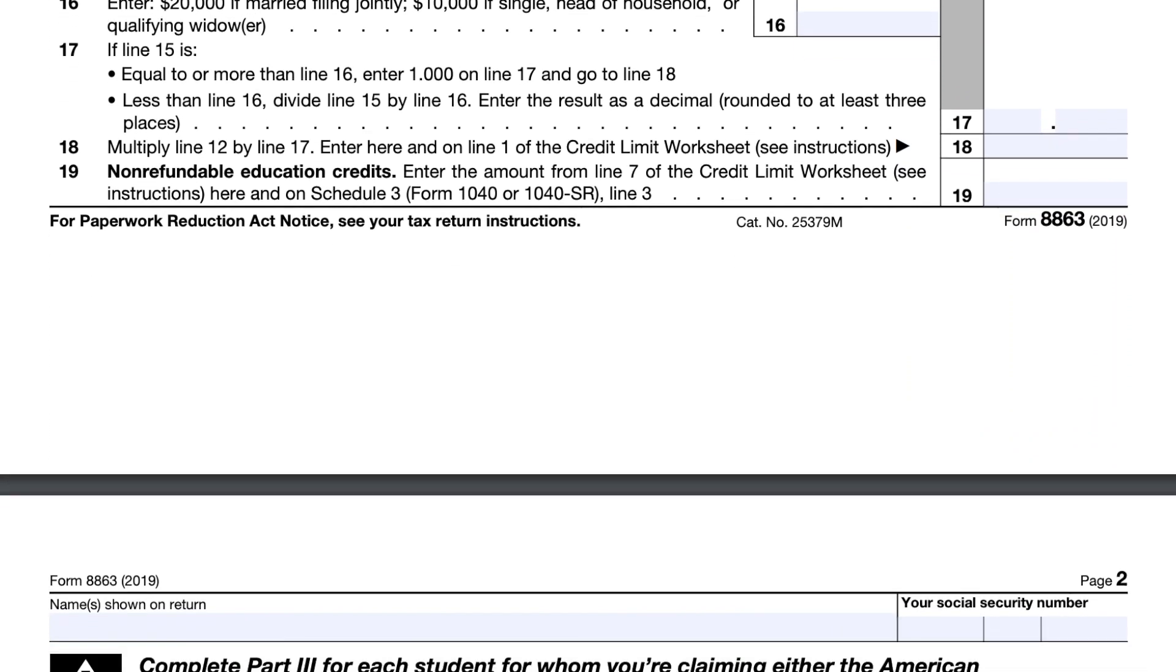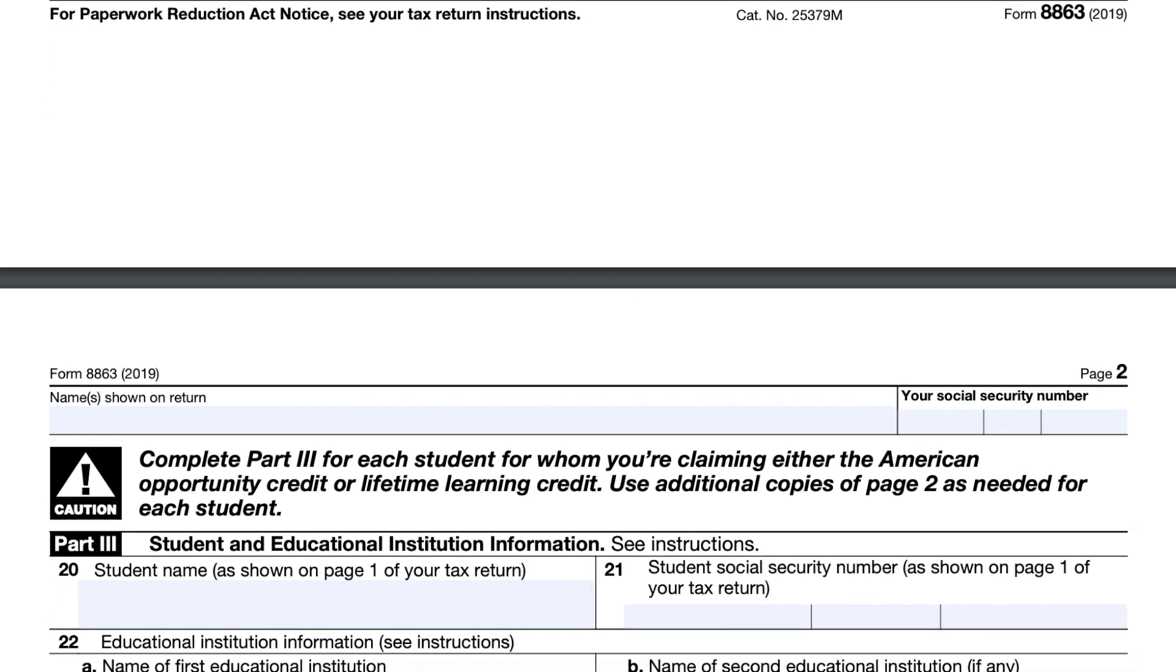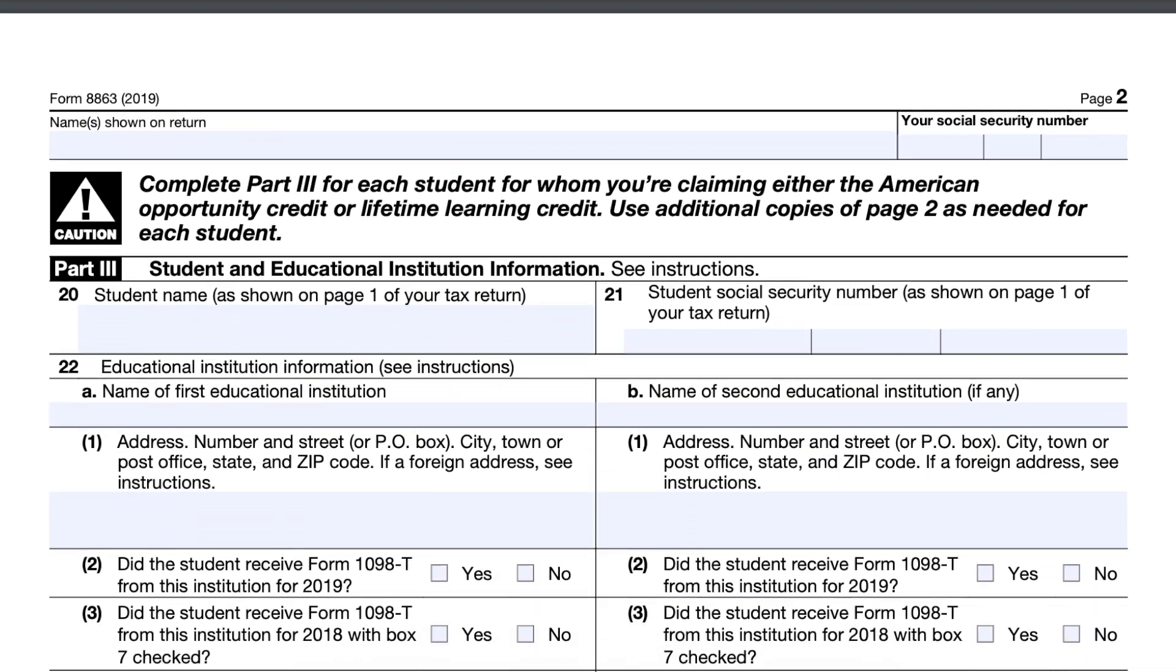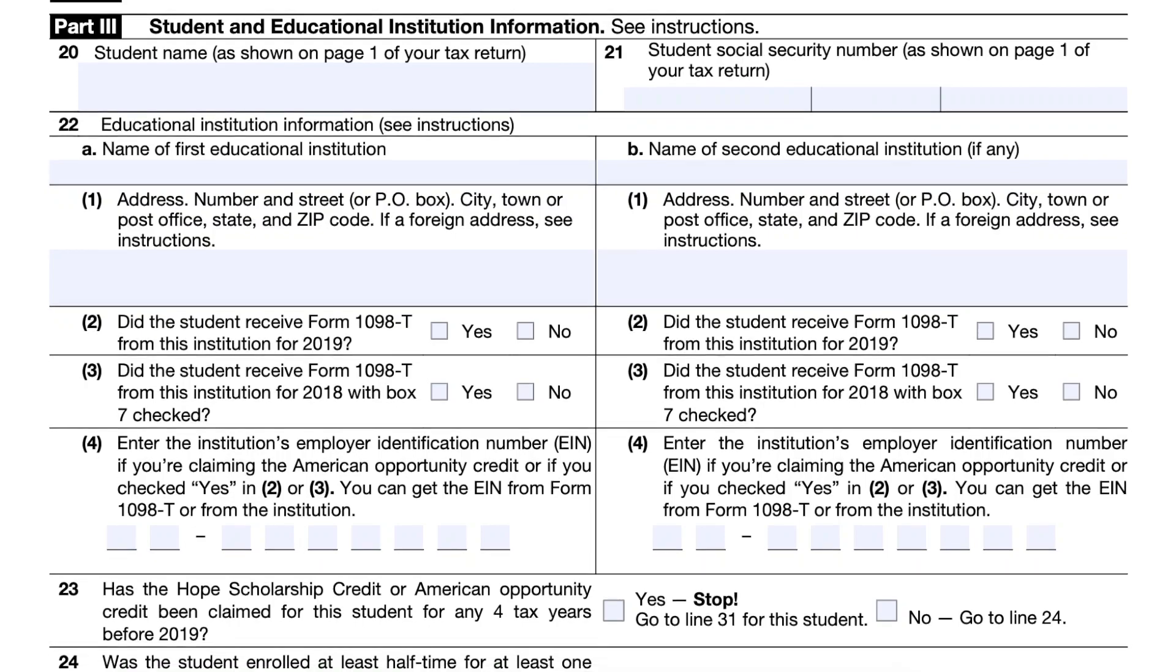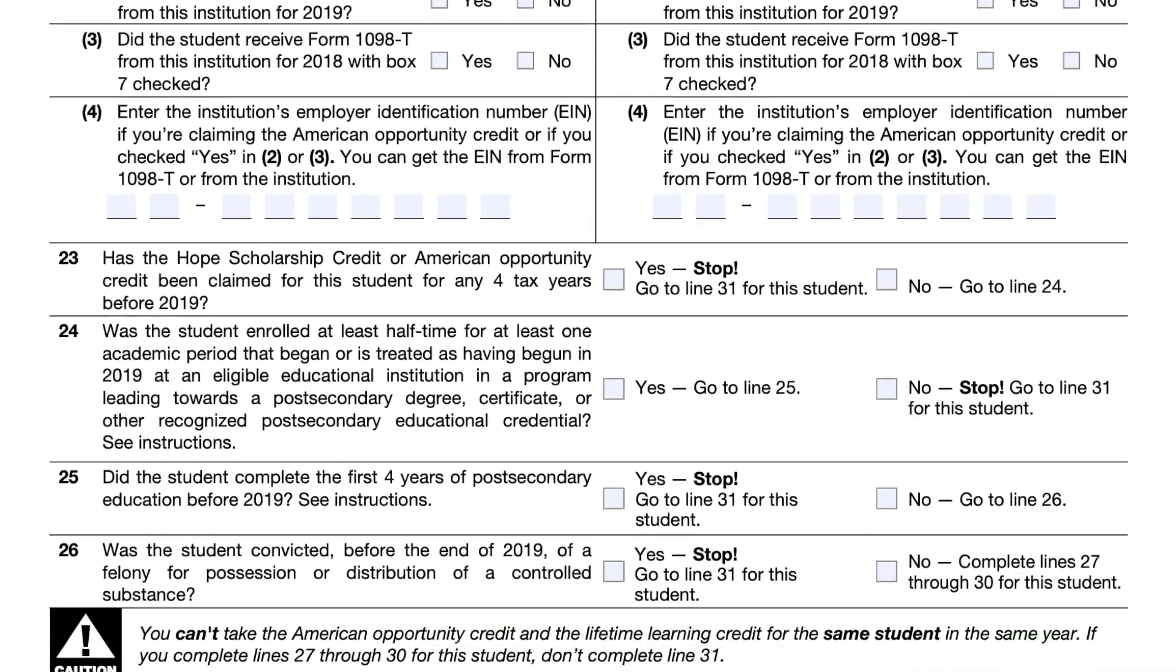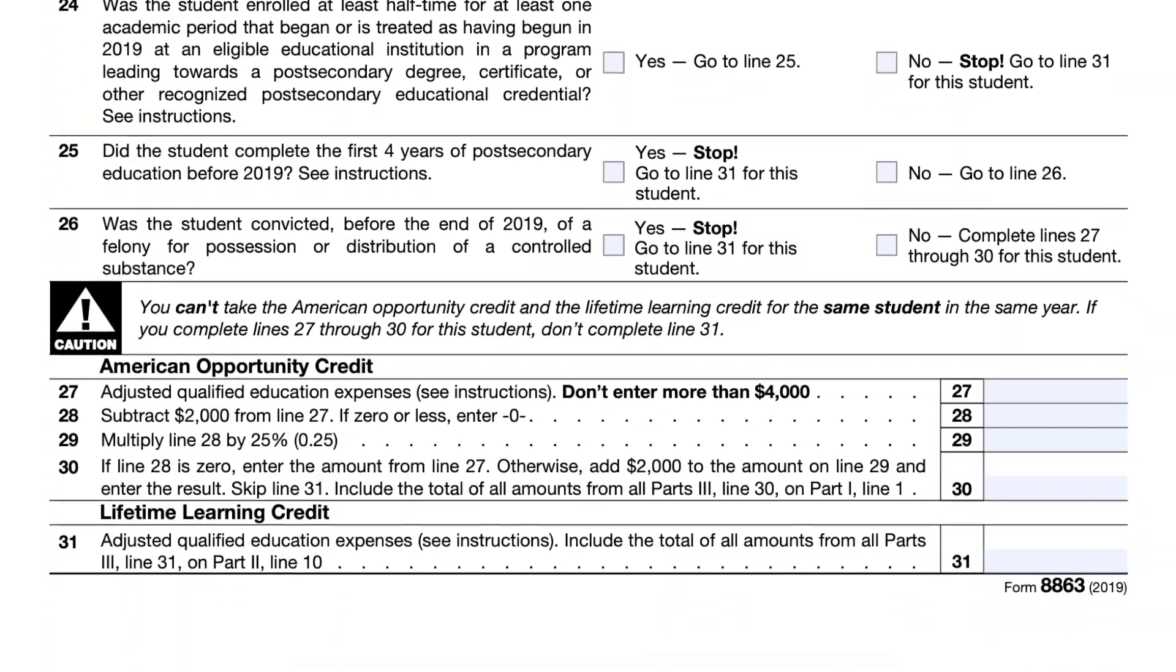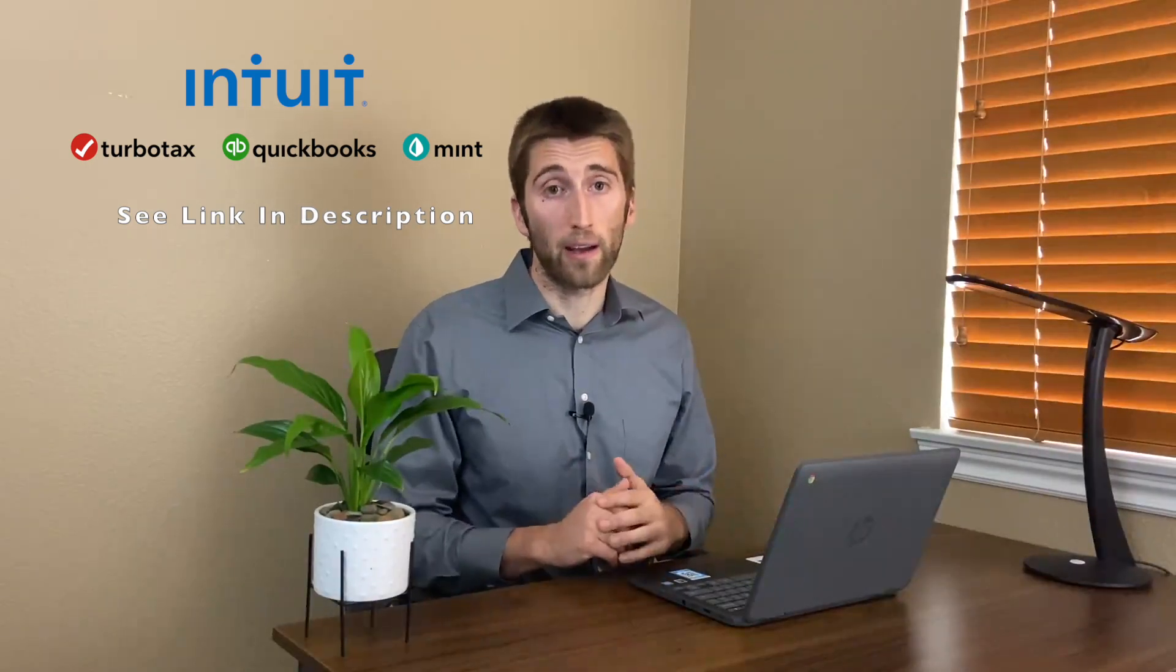It includes the American Opportunity and the Lifetime Learning Credit. So on there you will see the different ones and what you need to qualify for. It's very simple on here but at the same time it's complicated as everything is with taxes. And if you're filing with an online tax filing software such as TurboTax, then it will be doing all of this for you, filling it all out for you, and you'll just have to input any information that it asks for.